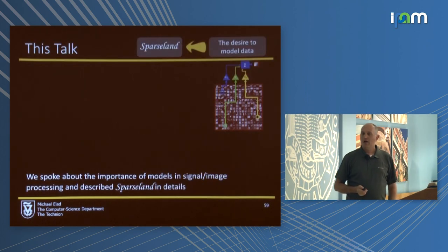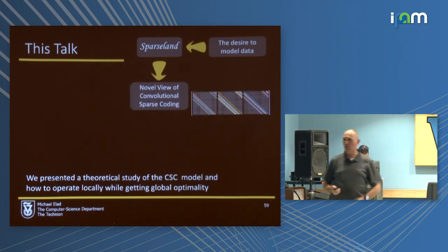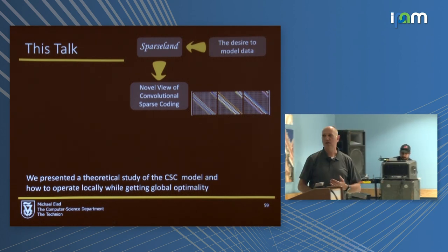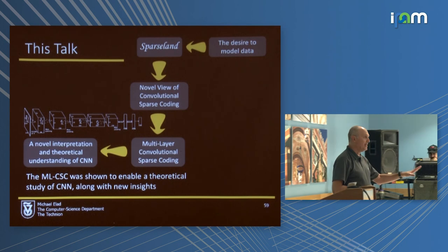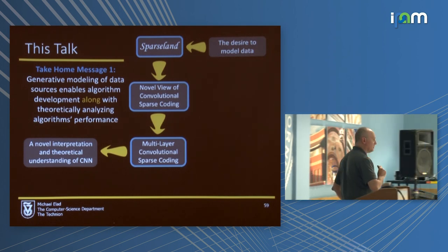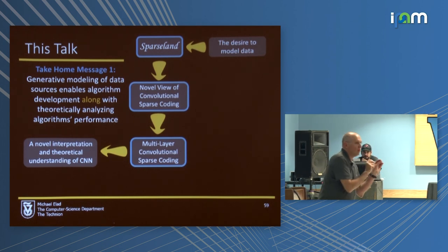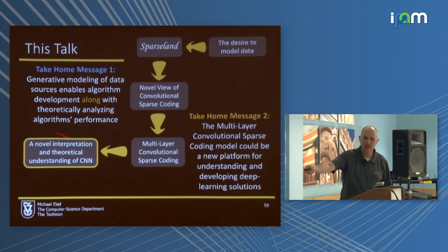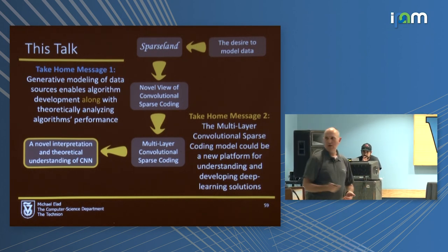Time to conclude. I started with the description of the need for models in sparse land. From there, I moved to convolutional sparse coding and described the new theory. Then we moved to the multi-layered version and saw a lovely connection to neural networks. There are two messages: first, these three are all generative models, and being generative models we can analyze their performance and find what dictates when things will succeed or not. The second message is the connection to neural networks — something we feel might be the grounds for a theory for deep learning.